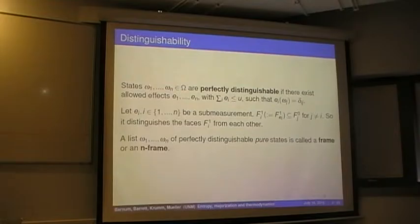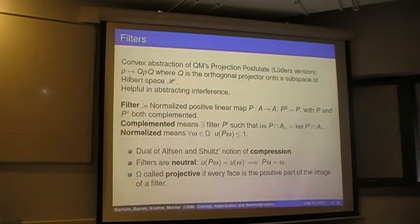Faces are important because, for instance, the set of things on which an effect is zero is a face and the set of things, states on which an effect is one, is a face. So if you're interested in distinguishable sets of states, you're talking about faces, basically. Perfectly distinguishable states. That means there's effects e1 through en, such that when you evaluate them, effect i on state j, you get delta ij. So, perfectly tell you whether you have that state or not. And, of course, these have to be a measurement or at least extendable to a measurement. So they add up to less than this normalization function. So the probabilities add up to less than one, or add up to one. We'll call a set of perfectly distinguishable states a frame.